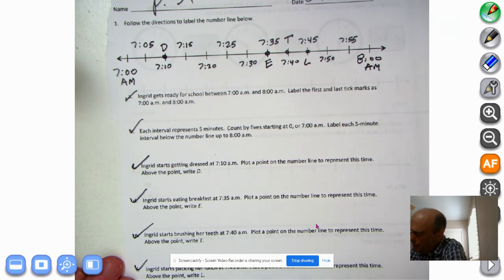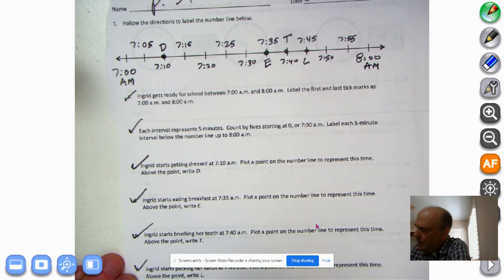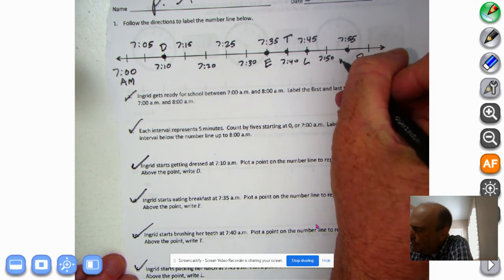Ingrid starts waiting for the bus at 7:55 AM. Plot a point on the number line to represent this time. Above the point, write W for waiting. So 7:55, she waits.